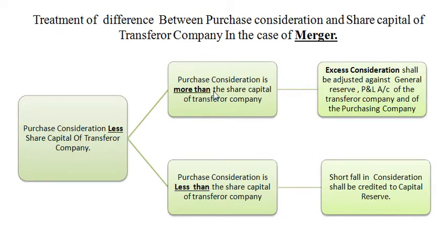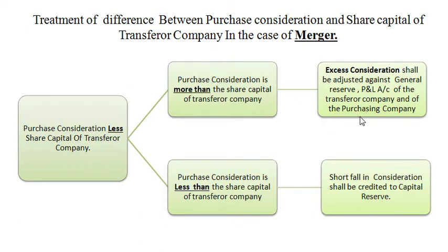Now let us see the treatment of capital loss and capital profit. Regarding capital loss: the excess consideration, that is the capital loss, shall be adjusted against the general reserve and profit and loss account balance of both the transferror company and the transferee company. Regarding capital profit: the capital profit on consideration shall be credited to capital reserve.